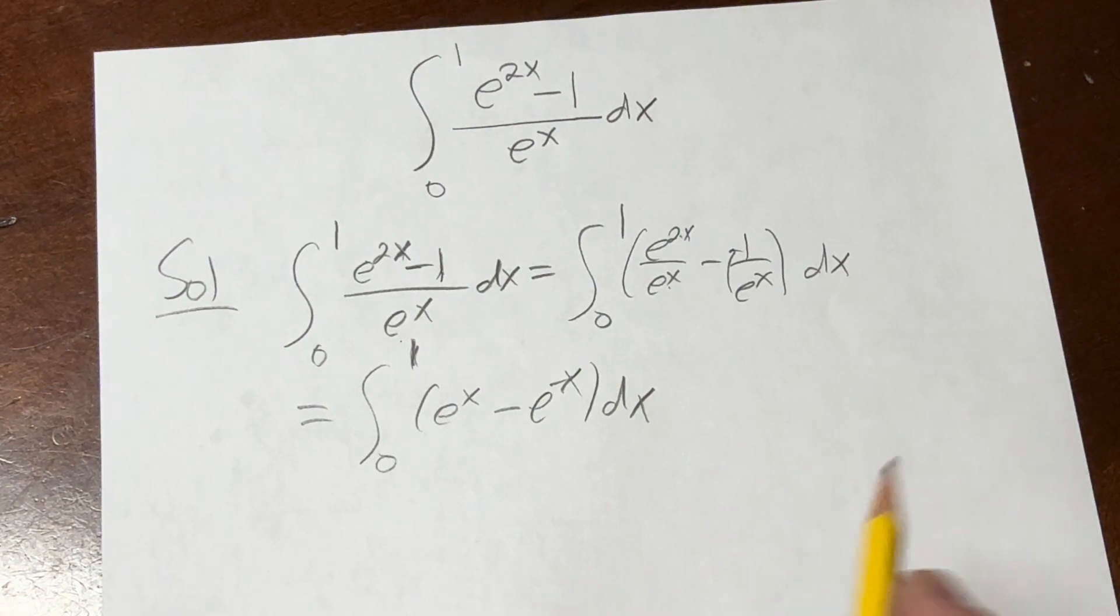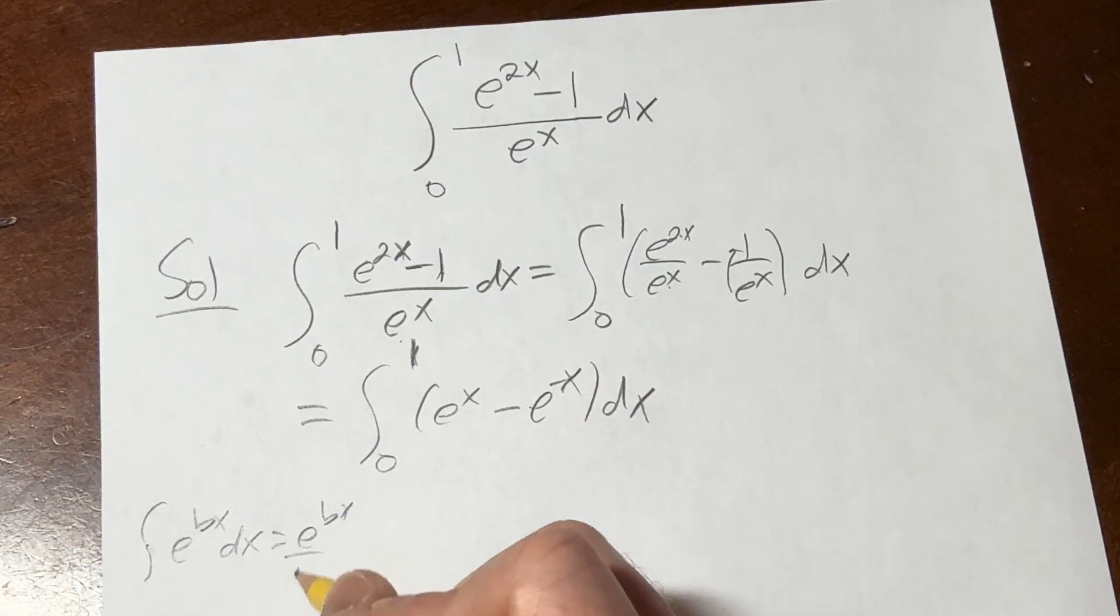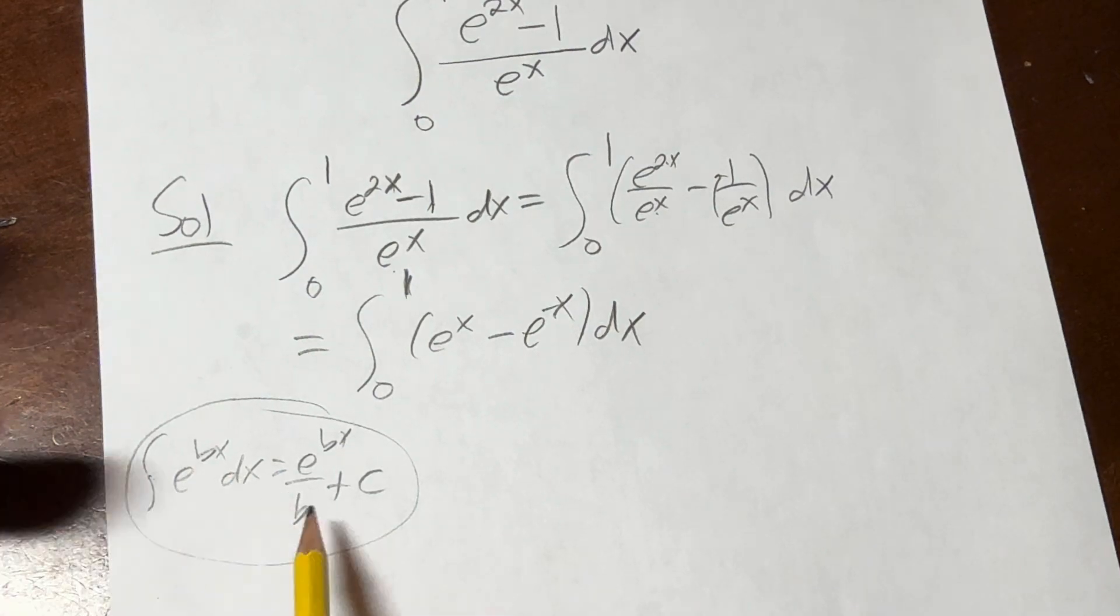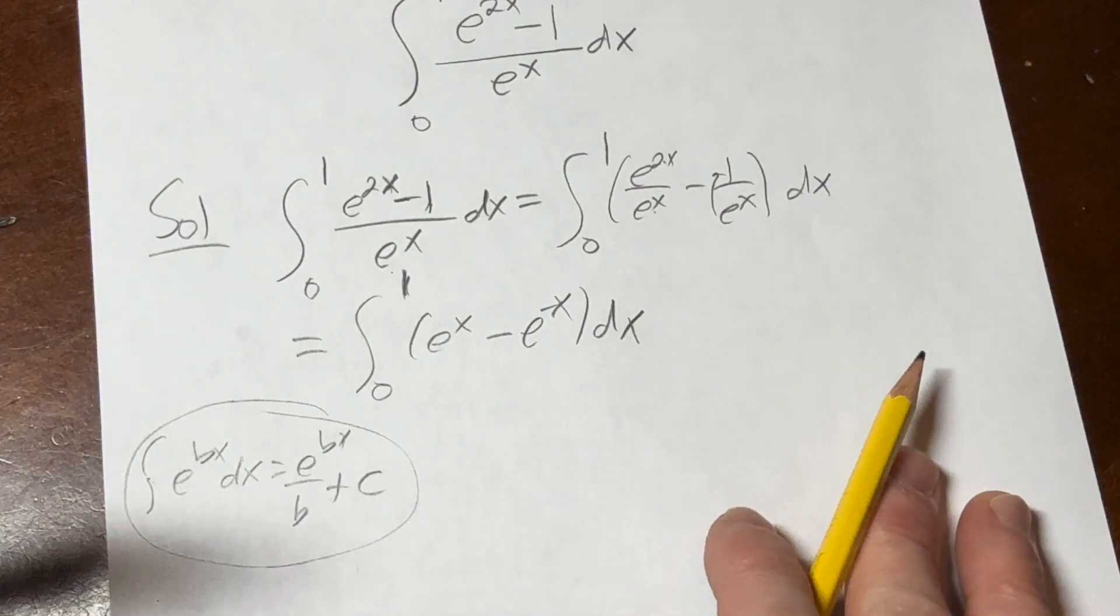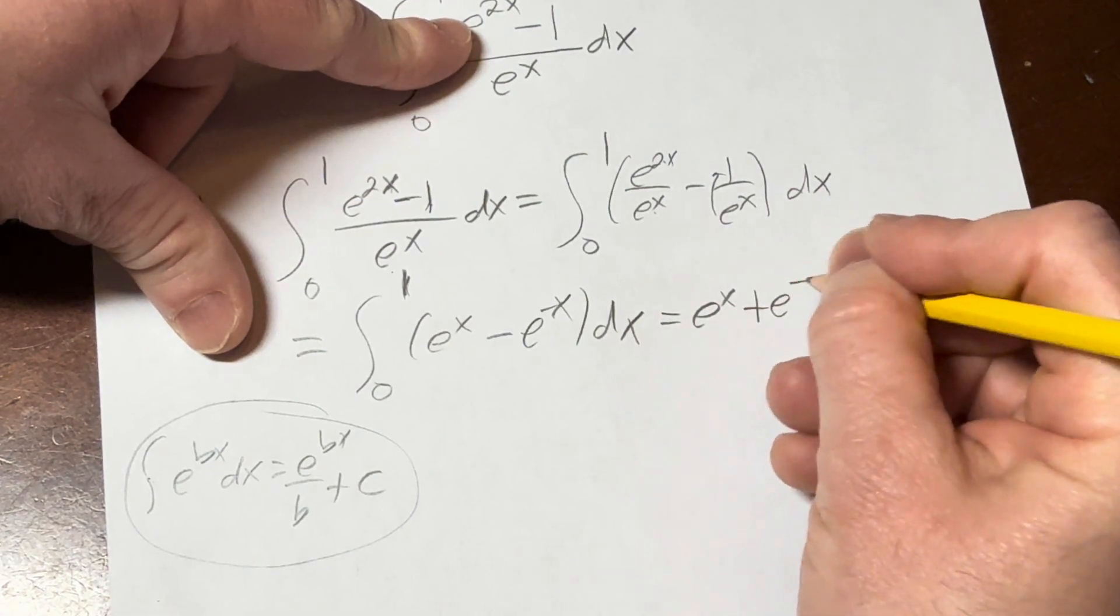The integral of e to the x is e to the x, and whenever you have like e to the bx dx, as long as b is not 0, you get e to the bx over b plus c. So you can just divide by the number. It's really easy to prove this using a u substitution. So in this case it'll be e to the x plus e to the negative x.